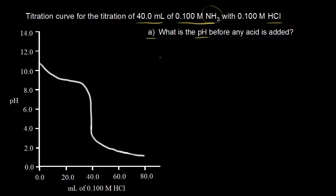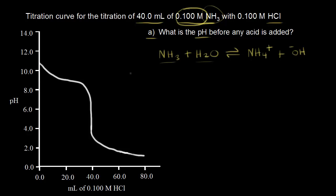We have a solution of ammonia, so we write NH3 reacting with water. Since ammonia is a base, it's going to take a proton from H2O. Adding H+ to NH3 gives NH4+, so we make some ammonium. Taking H+ away from H2O gives OH-, or hydroxide. Our initial concentration of ammonia is 0.1 molar. This is a weak base equilibrium problem.